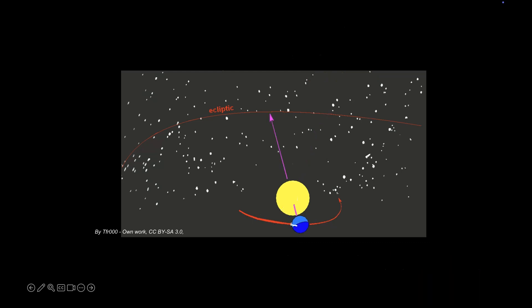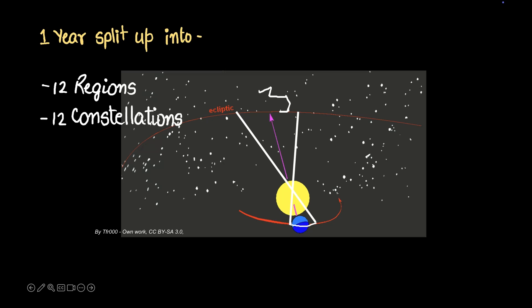Let's say in some other month, some other portion of the orbit was being covered by the earth, and during this month we saw some other shaped constellation. We would then call that month by the name of that constellation. Now, so the entire one year was split up into 12 regions, 12 portions, and that was corresponding to the 12 constellations which gave 12 months and which gave 12 sun signs.